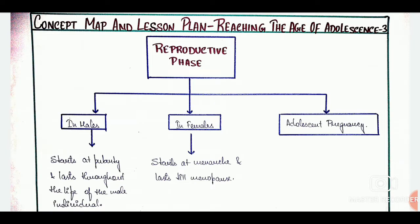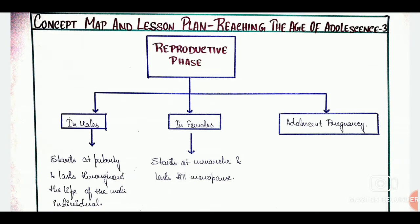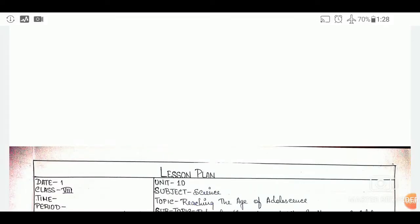This is the third lesson plan from the chapter 'Reaching the Age of Adolescence,' and at the very beginning we have the concept map here. We have already learned how to draw concept maps properly, so accordingly we have drawn here. After the concept map we move on to write the details.